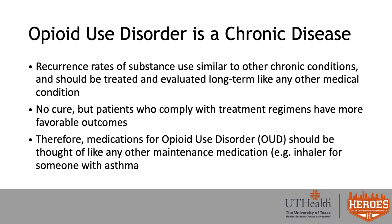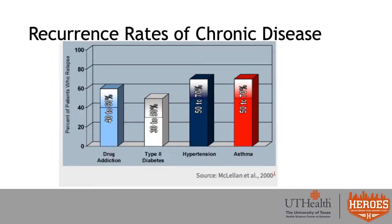The science supports that opioid use disorder is a chronic disease, with recurrence rates of substance use similar to other chronic conditions. It should be treated and evaluated long-term like any other medical condition. There is no cure, but patients who comply with treatment regimens have much more favorable outcomes. Medications for OUD should be thought of like any other maintenance medication, such as an inhaler for someone who has asthma. Drug addiction has recurrence rates in the same range as type 2 diabetes, hypertension, and asthma.